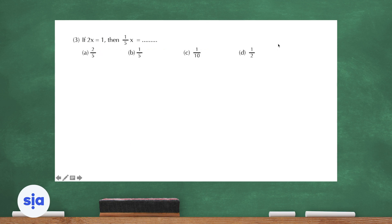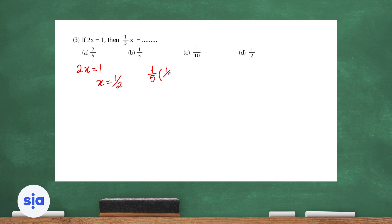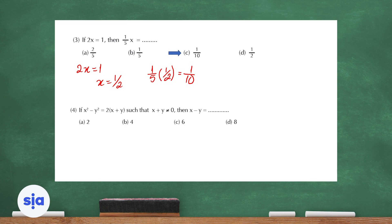Question 3: if 2x equals one half, the question is asking you to find the value of 1/5 of x. So if 2x equals 1, then x equals one half. So what's 1/5 of one half? It is 1 over 10. So the choice is choice C.